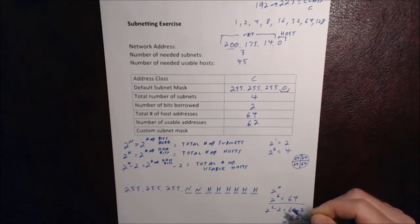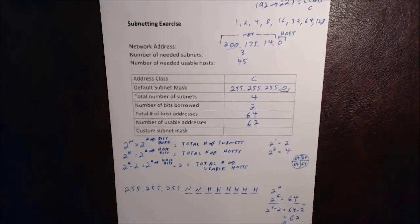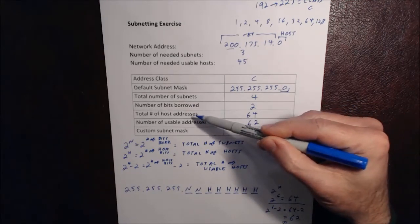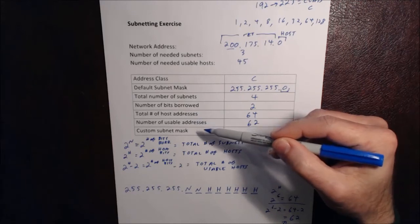The reason we subtract 2 is we subtract 1 for network. That's the network address. We can't use that to address any devices on the network. We cannot use it to address, put an address on a PC or a printer, and then we subtract 1 for broadcast, and the broadcast address is a special address that identifies all the devices on the network. It means that if I send a broadcast message on the network, I'm sending a message that will be received by every device on the network. So those are the two special cases, and because we cannot use those addresses for hosts, we subtract those out, so that's why there's a difference between total host addresses and usable host addresses.